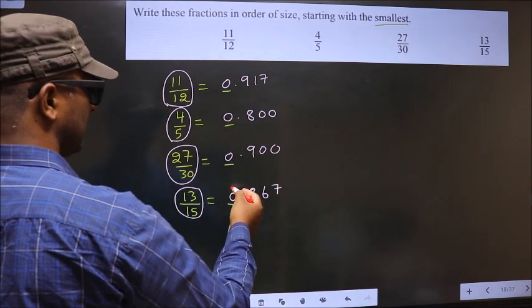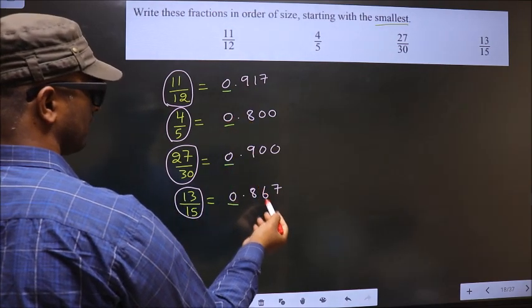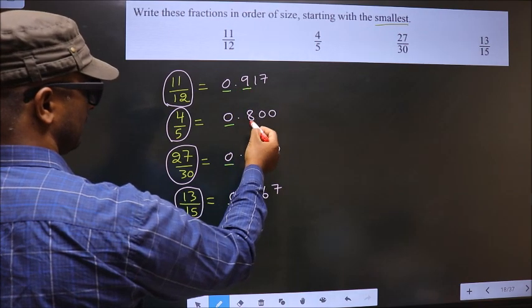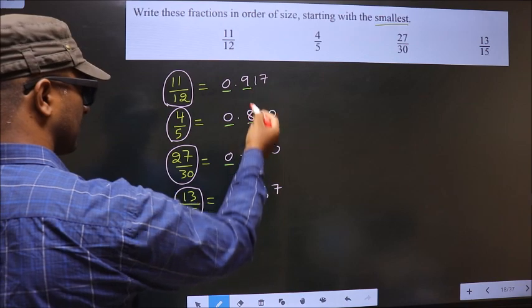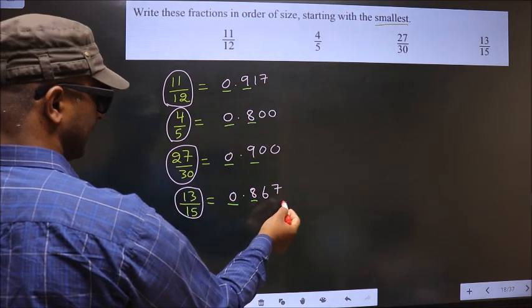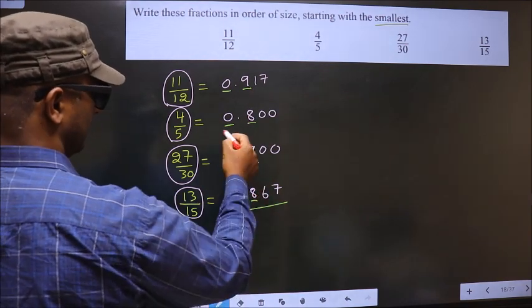0 in each place, so we cannot find the smaller one. So go to the next one: 9, 8, 9, 8. So from these numbers, smaller is 8. That is present here and here.